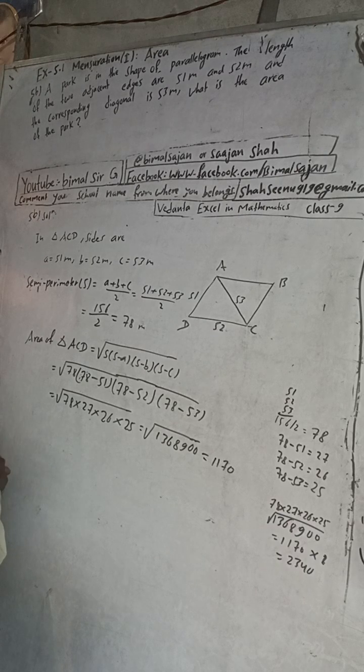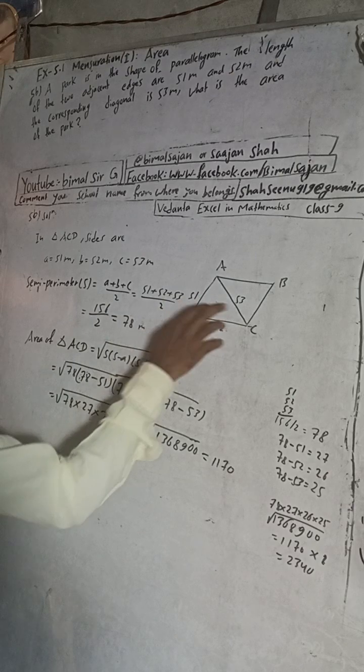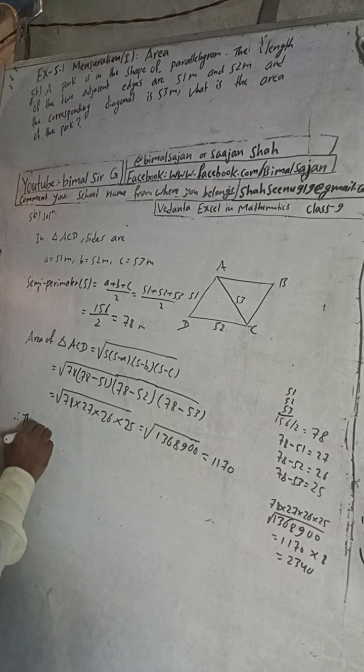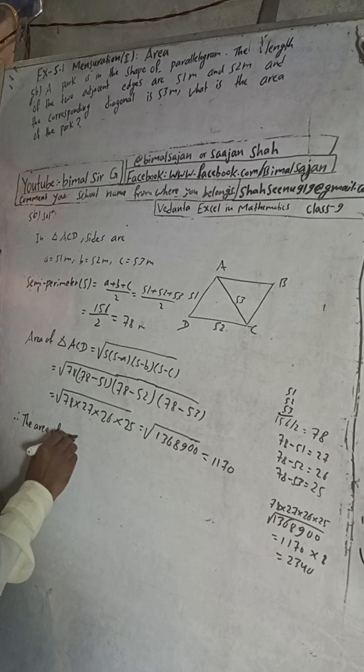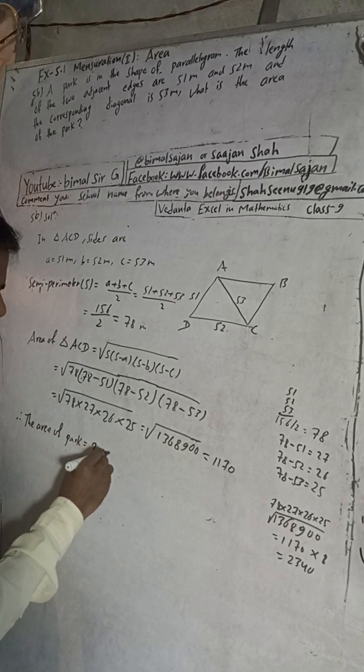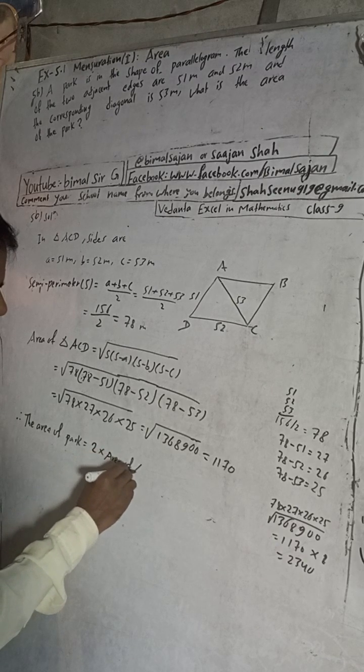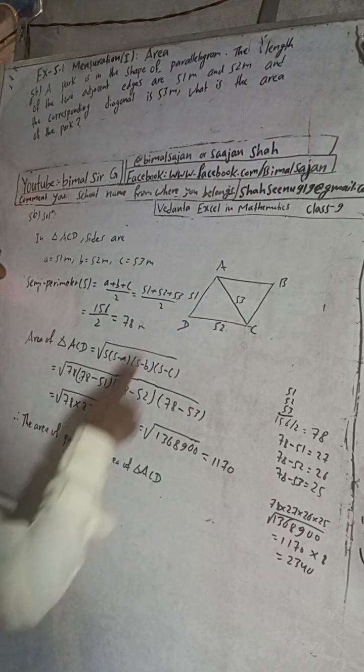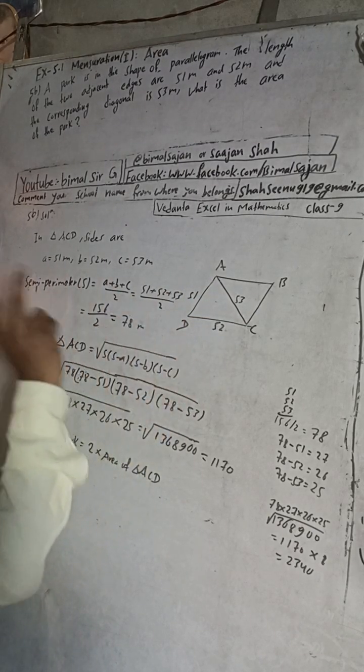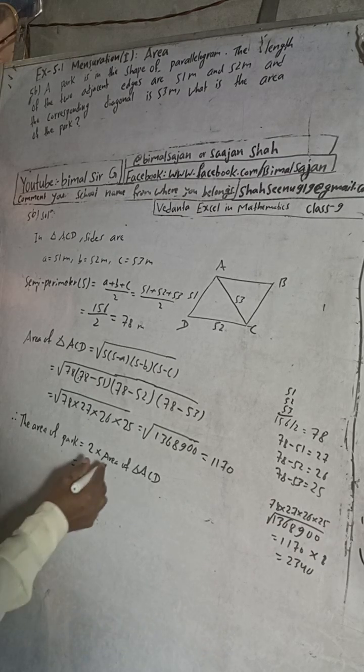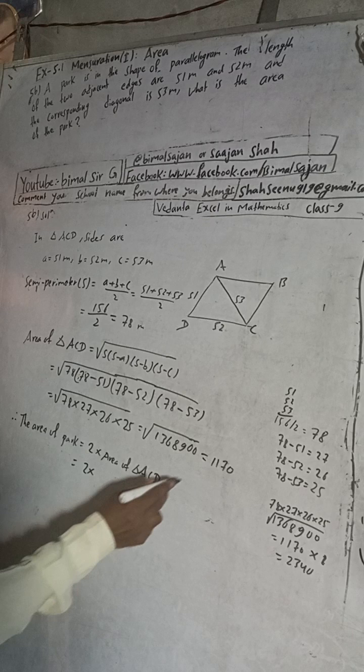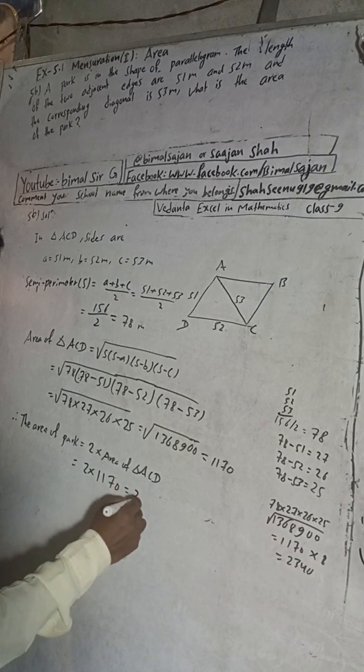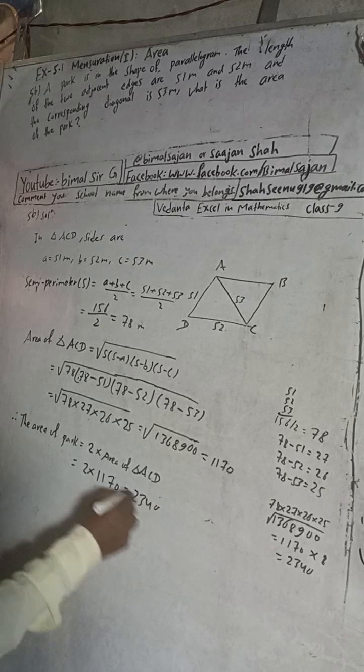Now we know the area of this triangle, 1170. Therefore, the area of the park is equal to 2 into area of triangle ACD. When you multiply in the calculator, you will get 2340. And this is the area, so this will be meter square. In the book answer is 2340, so this is the required solution.